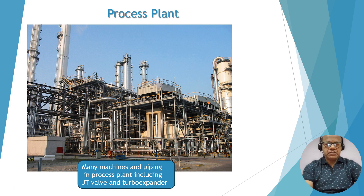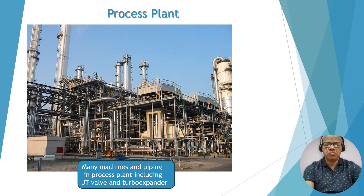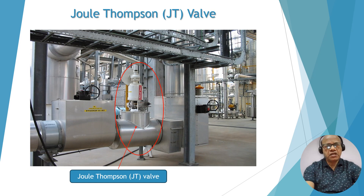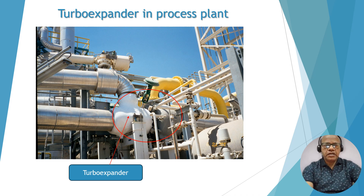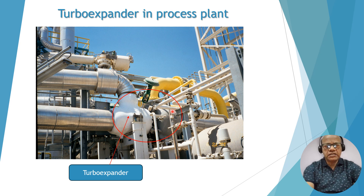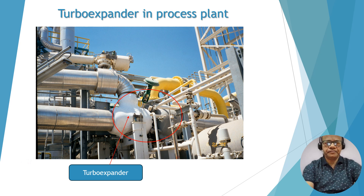This is a process plant which has many machines, pipings, valves, JT valves, and turbo expanders. This is a complete process plant. This is a JT valve — the Joule-Thompson valve, for short called JT valve. In the turbo expander, this is the expander side and the other side is the compressor. This is the expander inlet, expander outlet, compressor inlet, and compressor outlet.